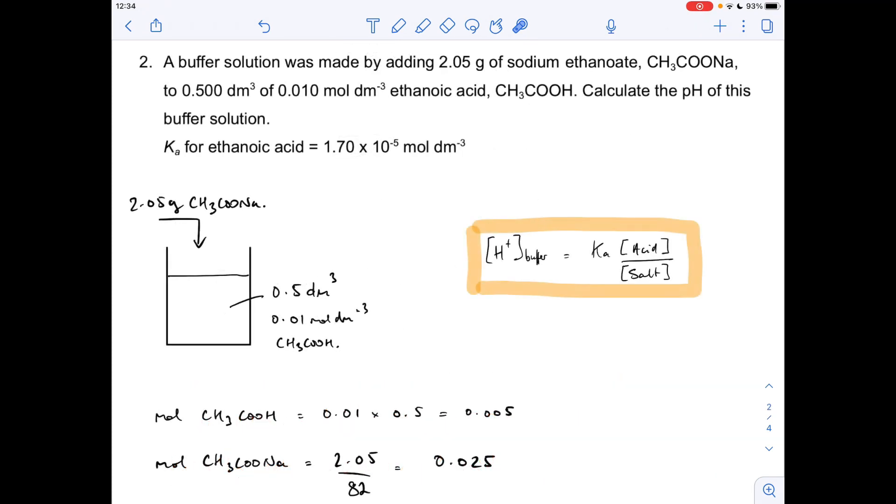Question 2 now, a little bit different. We've got a known mass of salt being dissolved into a volume and concentration of weak acid, ethanoic acid, and there's the Ka for the acid again. It centers around the acid over salt equation. This time we're just going to calculate the H+ concentration of the buffer and turn that into a pH.